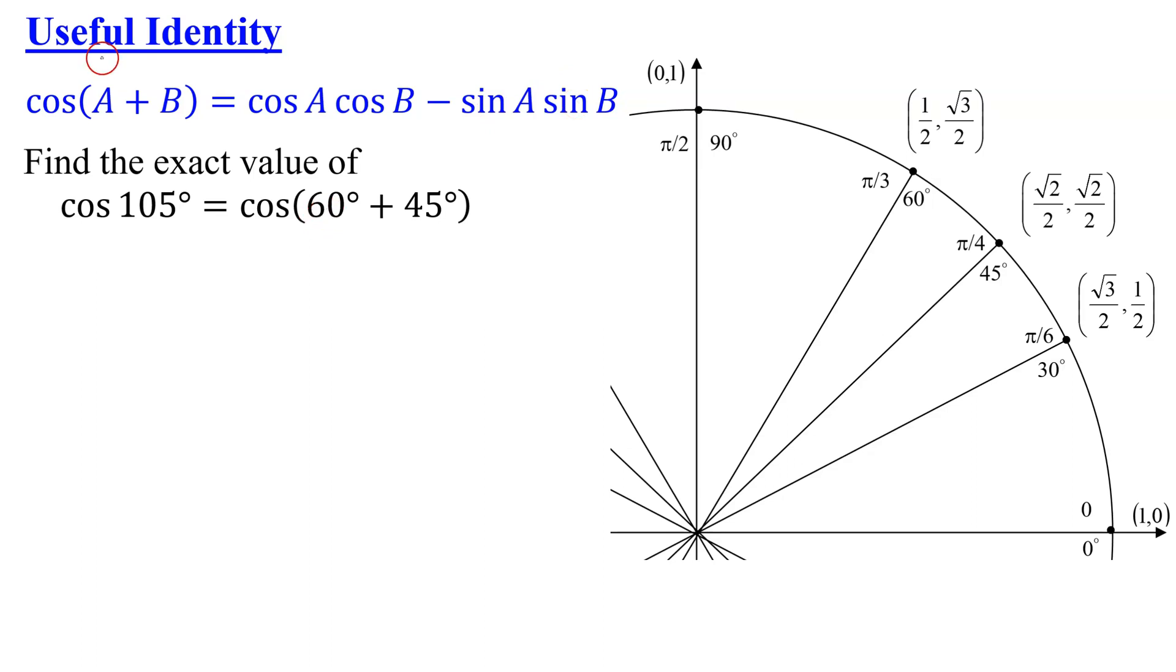So in this case, my A is 60 degrees. So wherever you see an A, you're going to put a 60 degrees and wherever you see a B, you're going to put 45 degrees.